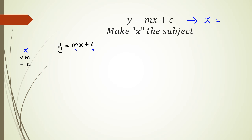To rearrange, I take plus c to the other side — the opposite of plus is minus — giving y − c = mx. Then since m is multiplied by x, the opposite of multiplication is division, so dividing both sides by m gives (y − c) / m = x. So x = (y − c) / m.